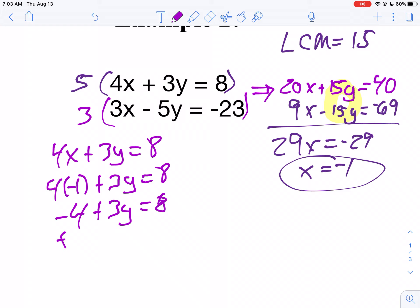So that makes negative 4 plus 3y equals 8. Well, we're going to add 4 to both sides. 3y equals 12. 3 times what gives us 12? Well, that means y is 4.